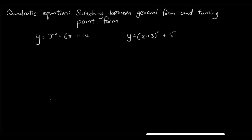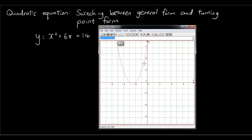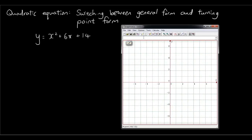So why would you want to switch between two ways of expressing the same equation? Well, let's have a look at this equation here: y equals x squared plus 6x plus 14. If we try to graph that equation — let me just get rid of my previous graph — we get this graph here.